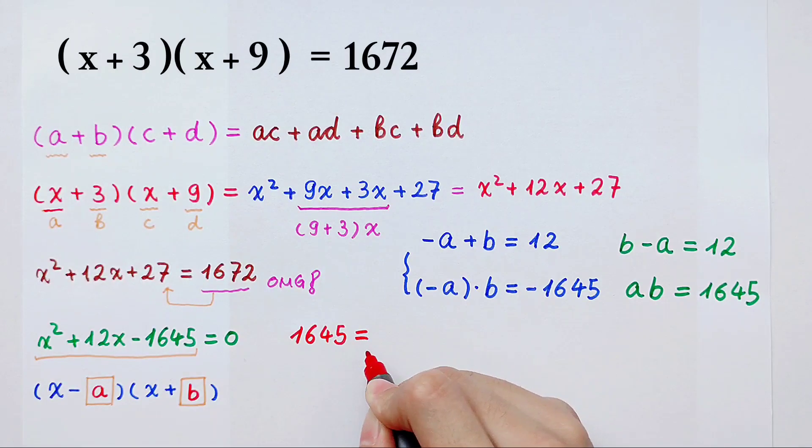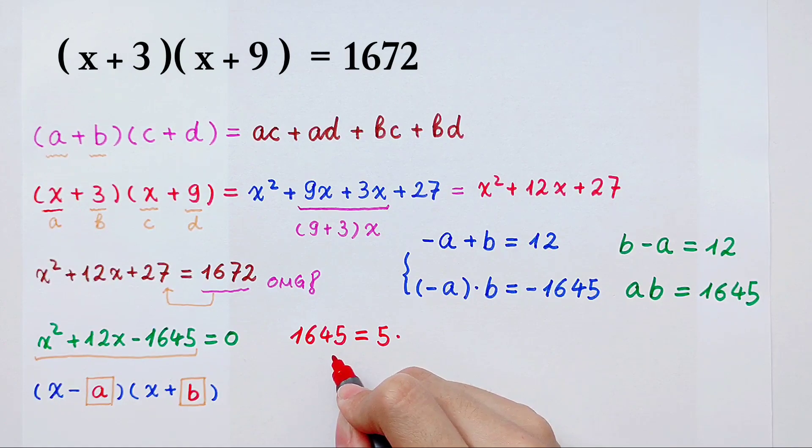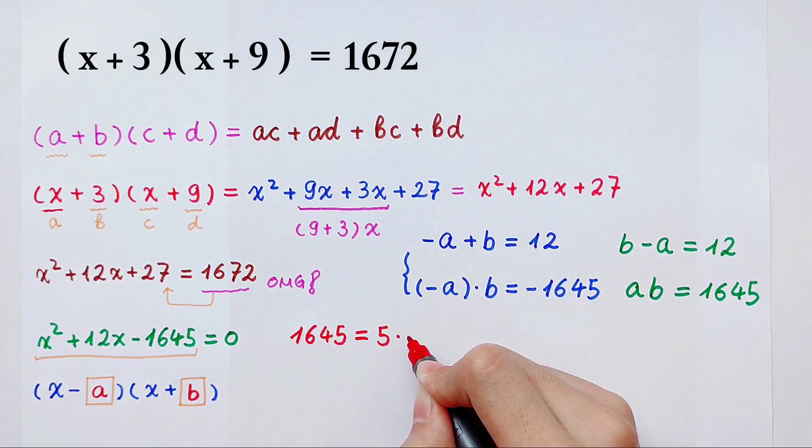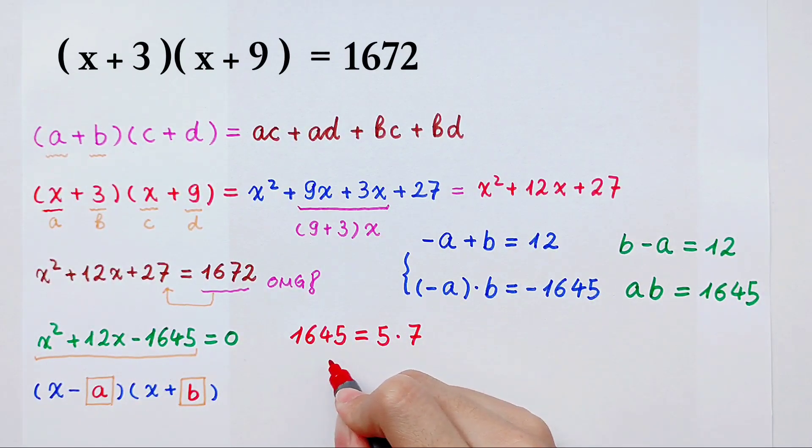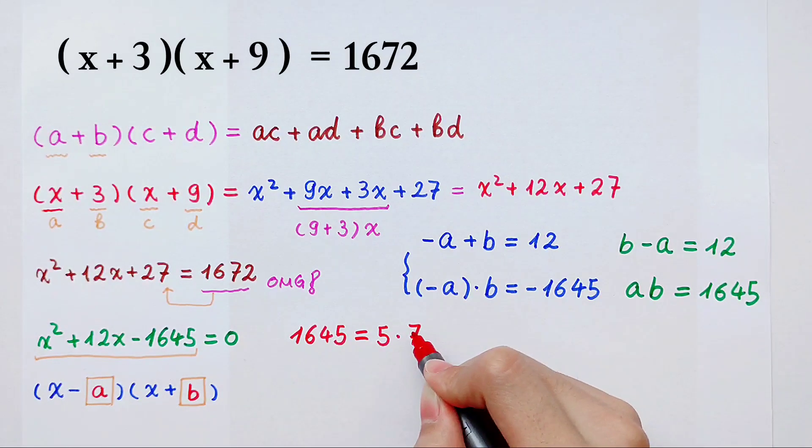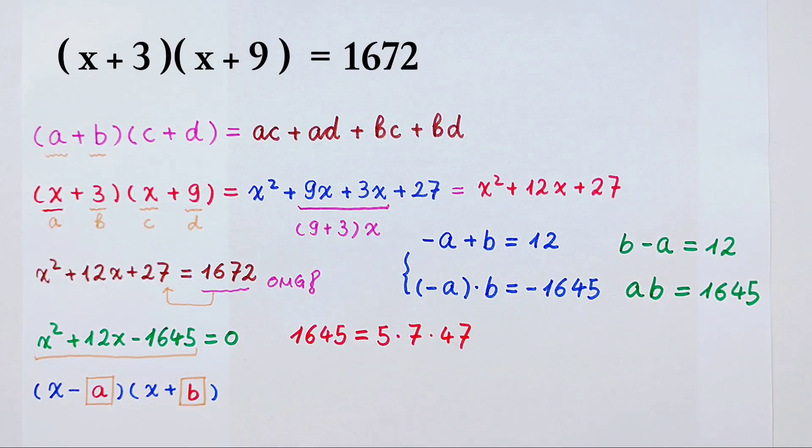1645, it is 5, then times, 1645 divided by 5, what is it? It's 329. And 329 is, I think it can write as 7. Then here the 329 then divided by 7 is, yes, 47. Awesome. We've decomposited it. It is 5 times 7, then times 47. They are all prime numbers.